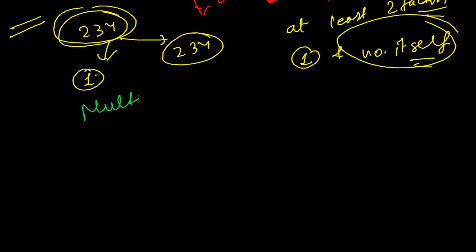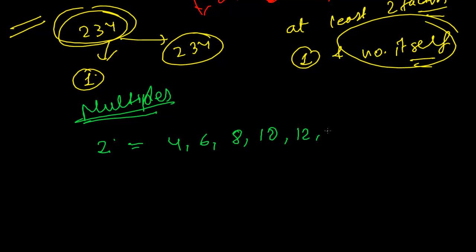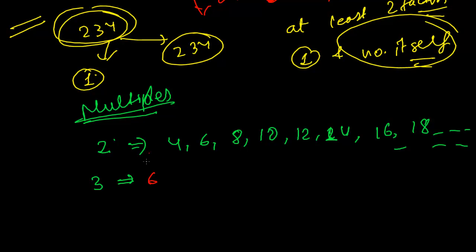Now let's talk about what multiples are — it's really easy. What are the multiples of 2? Basically, what are the numbers that 2 can divide? 2 can divide 2 itself, 4, 6, 8, 10, 12, 14, 16, 18, and so many more. What are the multiples of 3? Those are the numbers that 3 can divide: 3, 6, 9, 12, 15, 18, and so on.